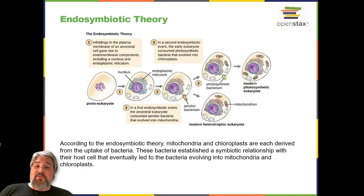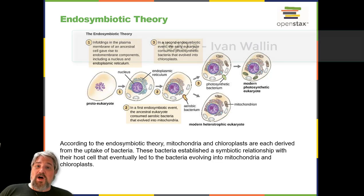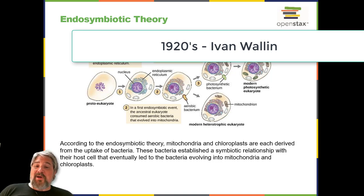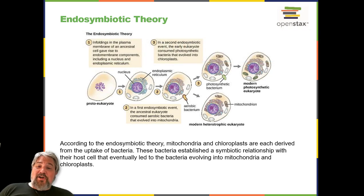Mereschkowsky's endosymbiotic hypothesis was furthered by American anatomist Ivan Wallin (1883–1969), who began to experimentally examine the similarities between mitochondria, chloroplasts, and bacteria — in other words, to put the endosymbiotic hypothesis to the test using objective investigation. Wallin published a series of papers in the 1920s supporting the endosymbiotic hypothesis, including a 1926 publication co-authored with Mereschkowsky. Wallin claimed he could culture mitochondria outside of their eukaryotic host cells, but many scientists dismissed his cultures as resulting from bacterial contamination.